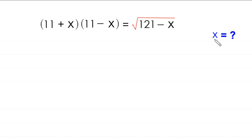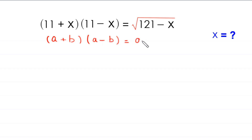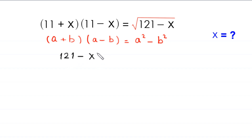Let's start. By using the algebraic identity (a plus b) times (a minus b) equals a squared minus b squared, the expression (11 plus x)(11 minus x) becomes 121 minus x squared, which equals the square root of (121 minus x).